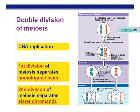Part 3: Double Division of Meiosis. Remember that in meiosis we're going to be making cells that go from diploid to haploid — two sets of chromosomes to one set of chromosomes. Now we're going to go into the details on how that works.